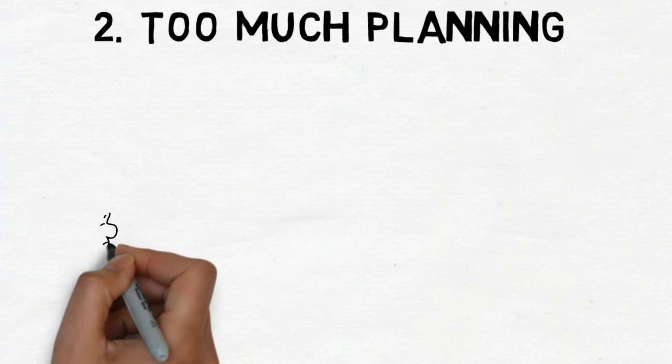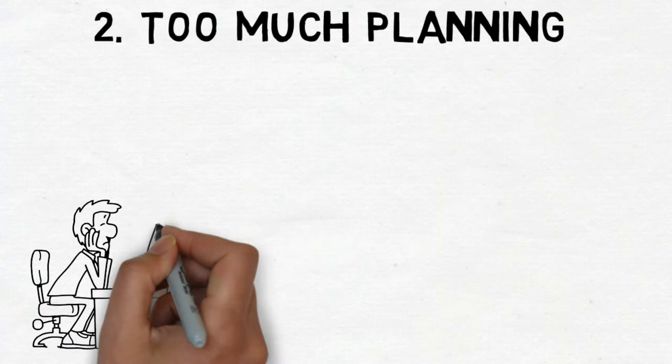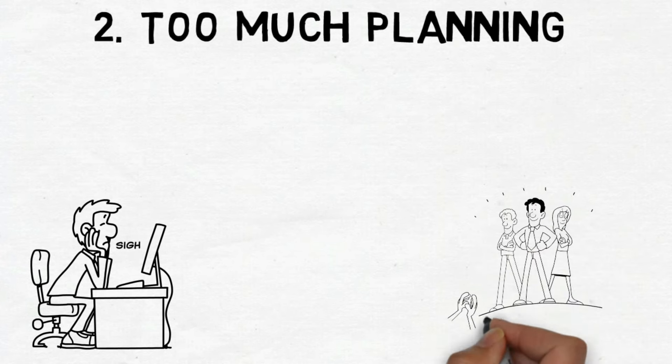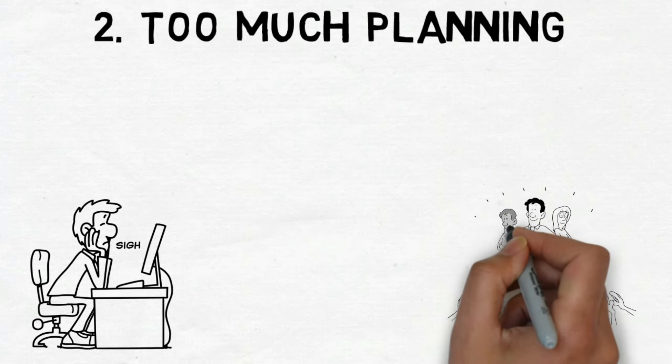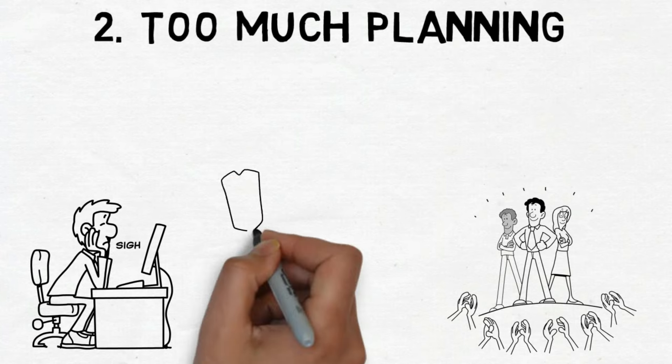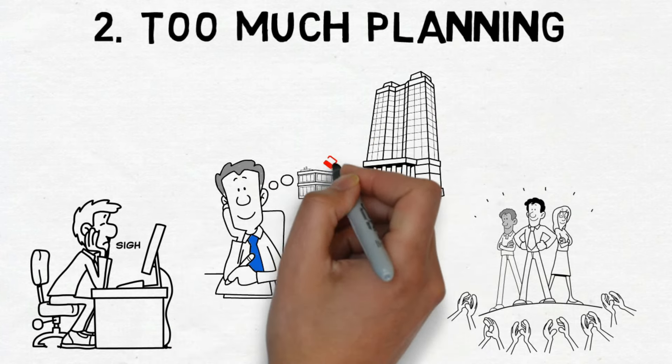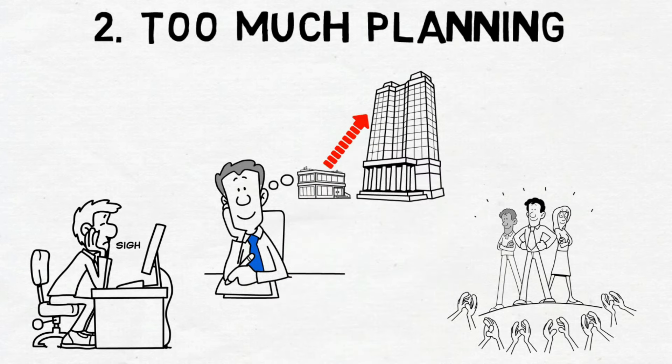Number 2. Too much planning. Spending too much time planning might not be worth it in the end. People who accomplish big things often don't have detailed plans for every single step of their journey. Instead, they maintain clarity regarding their goals and possess unwavering confidence in their ability to succeed.